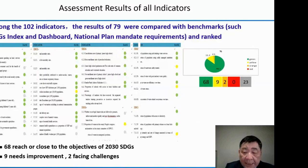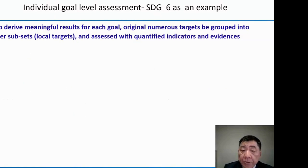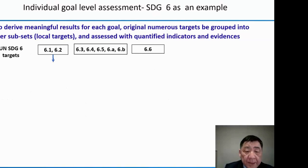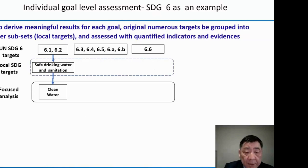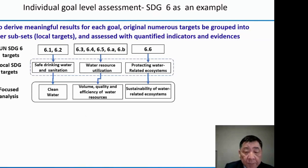In order to derive meaningful results, we group numerous targets into fewer subsets — what we call local targets. For SDG 6, we used focus analysis to group targets into: clean water and water resources utilization, and protecting water-related ecosystems. The focus areas become clean water volume, quality and efficiency of water, and the sustainability of water-related ecosystems.